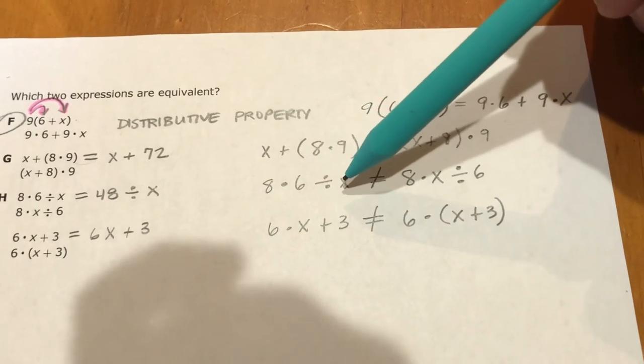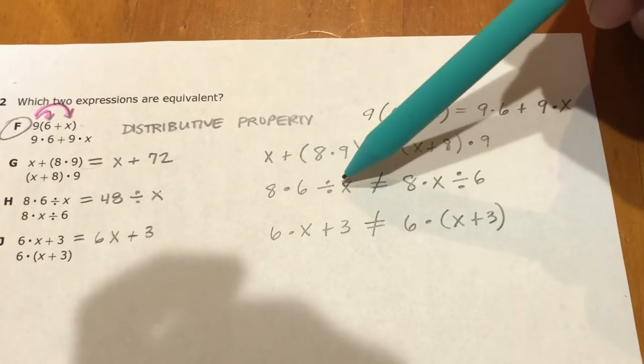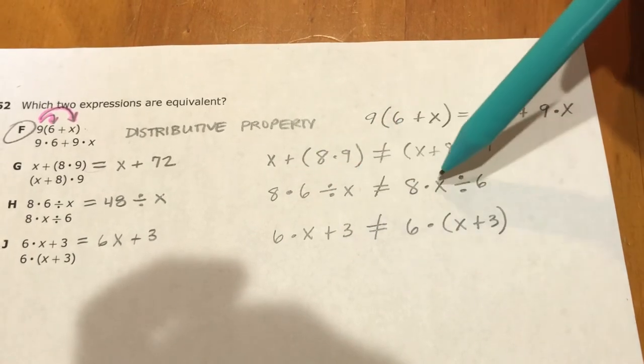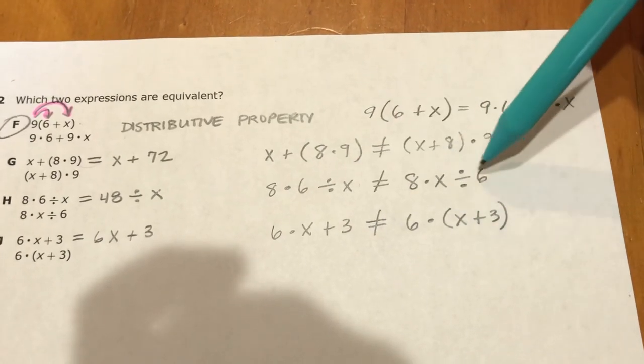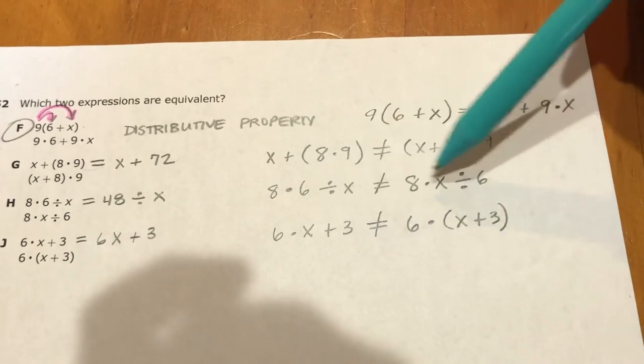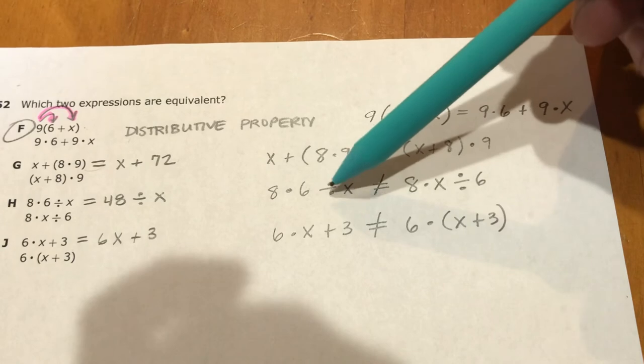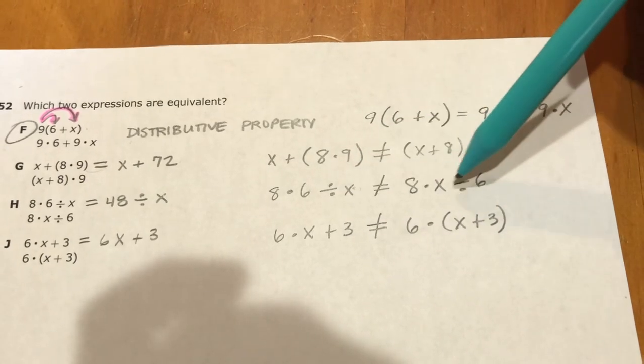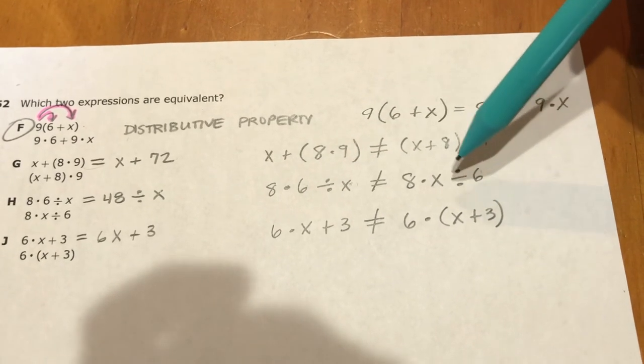This one, what they tried to do was the commutative property with 6 and x. They tried to say you can switch those around. You can do that with addition and multiplication. You cannot use the commutative property with division and just swap things around, because 6 divided by x is a different answer than x divided by 6. Division doesn't work that way.